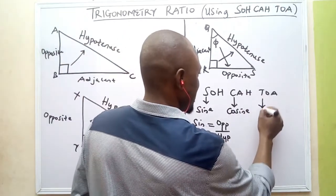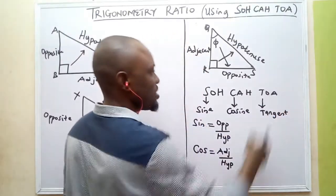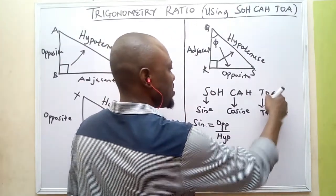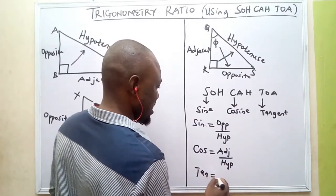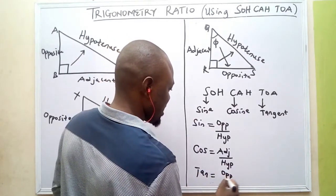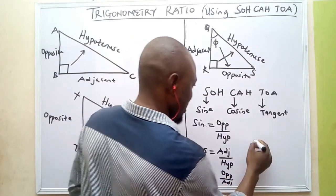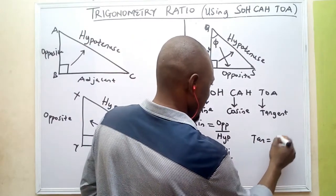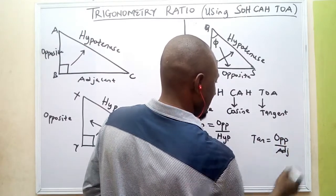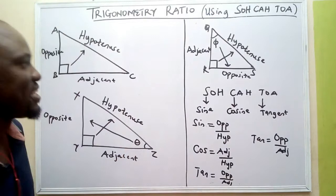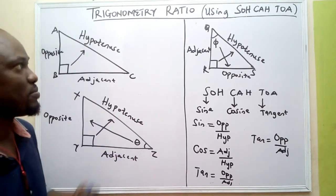TOA: tangent means the opposite side divided by the hypotenuse side. You need to understand how to make use of SOHCAHTOA.